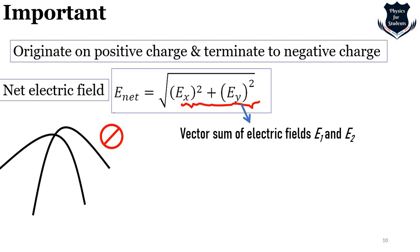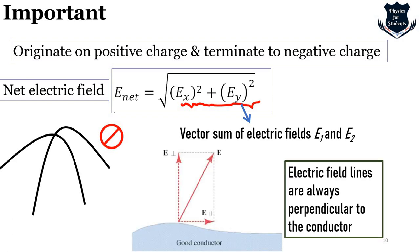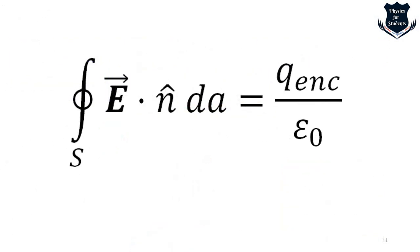Electric field lines never intersect each other. If two lines intersected at a point, two tangents could be drawn there, indicating two directions of the electric field, which is impossible since there can only be one direction at any point. Additionally, electric field lines are always perpendicular to the conductor surface.